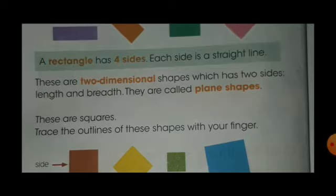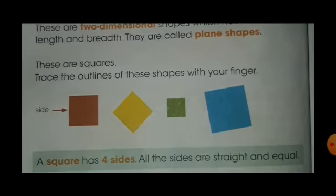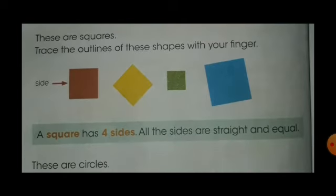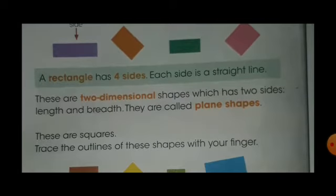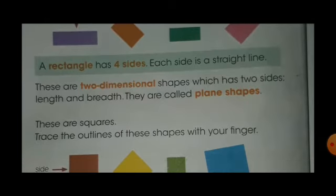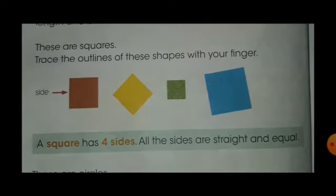These are squares. Trace the outlines of these shapes with your finger on your book. A square has four sides — all the sides are straight and equal. This is the main difference between square and rectangle: the sides of a rectangle are not the same. Two sides are shorter than the other two sides. But in a square, all four sides are equal.